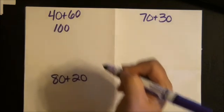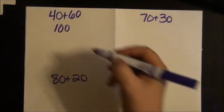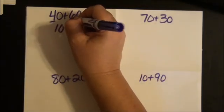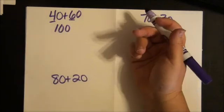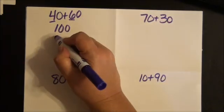Now if you want to use making 10, you can do that. 4 plus 6 is 10, and so 40 plus 60 would be 100.